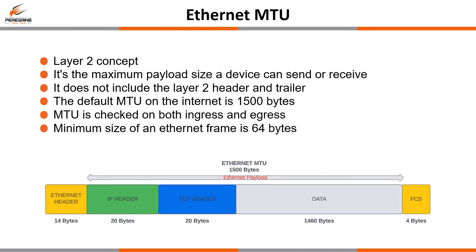It's also worth mentioning the minimum size of an Ethernet frame is 64 bytes, and this includes the Ethernet header and trailer. A frame will also be automatically padded out if it is smaller than 64 bytes to make up the difference before transmission.